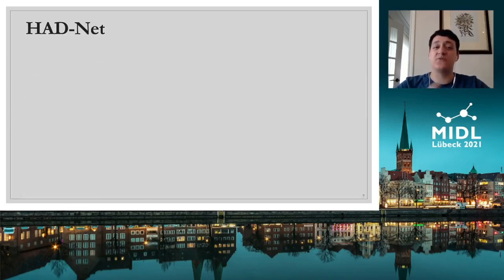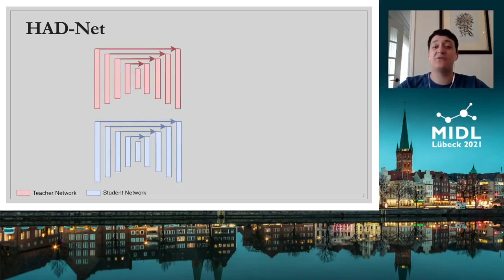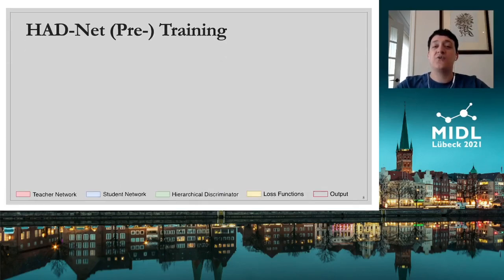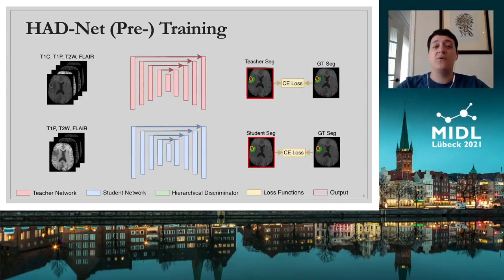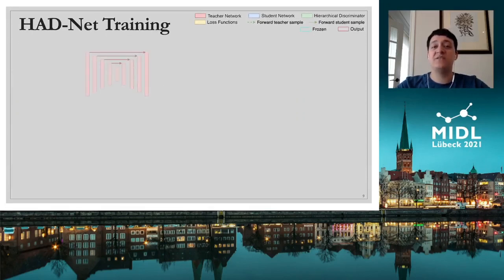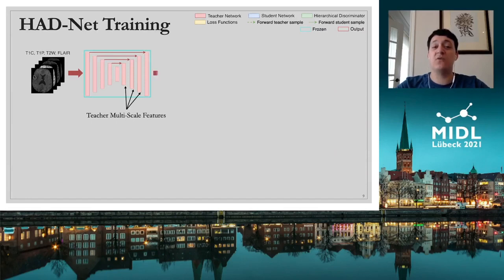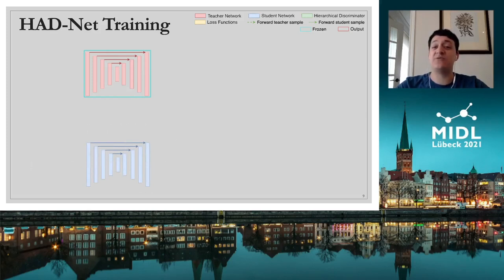The HADNET framework consists of three components: a teacher network, a nearly identical student network, and a patch-based hierarchical discriminator denoted HD. The training procedure begins with the independent pre-training of both the teacher and the student networks. Both networks follow a nearly identical training protocol, with the only difference being that the teacher receives all available sequences as input, while the student only receives the pre-contrast images. Once training is complete, the weights of the pre-trained teacher network are frozen, while those of the student are kept variable. Naturally, as the teacher was provided additional key information during pre-training, a large domain gap exists between it and the student.